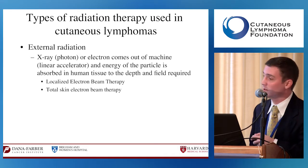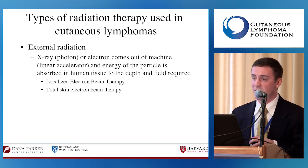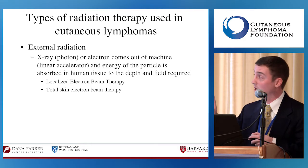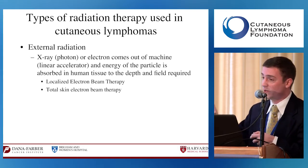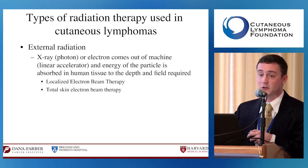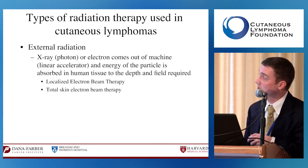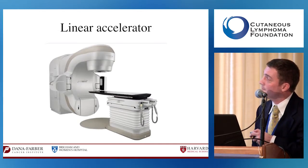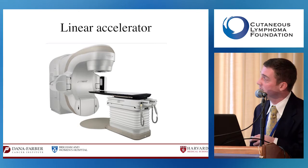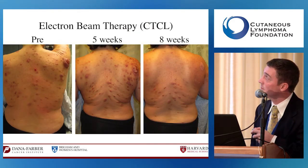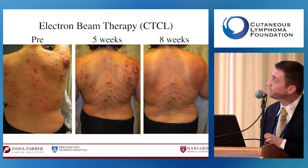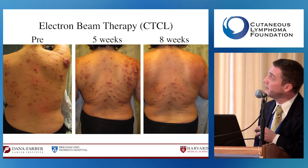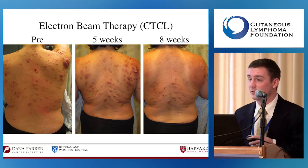Computers and algorithms allow us to target how deep the electrons go into the tissue. We have localized electron beam therapy, where we're only treating a certain patch, plaque, or tumor of B-cell or T-cell lymphoma, and total skin electron beam therapy, where we treat the whole skin. Here is an example of electron beam therapy showing a large tumor on the upper right shoulder that at five weeks is starting to melt away, and at eight weeks is completely gone.